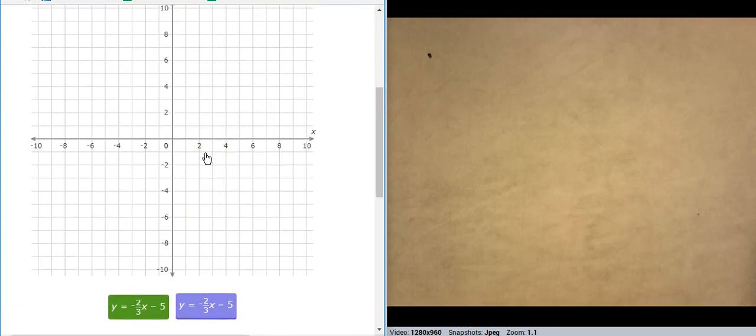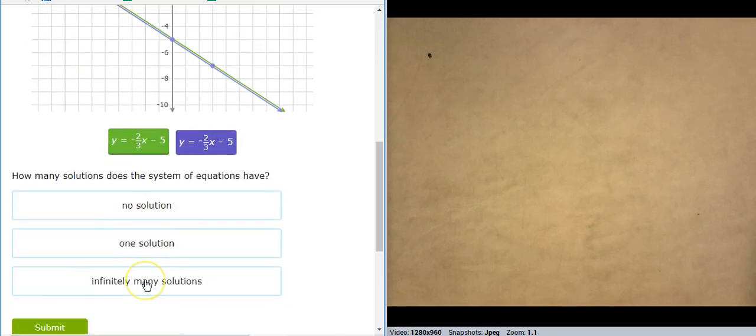Two lines, both in slope-intercept form. This one starts at negative five. It goes down two over three. This one starts at negative five. It goes down two over three. Hey, look at that. That exact same equation, exact same line. Infinite solutions.